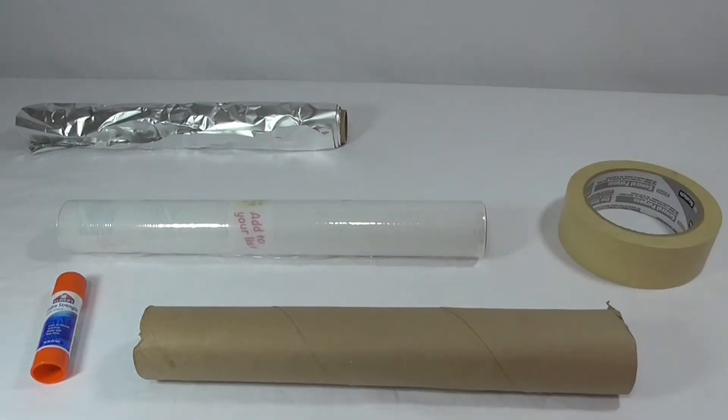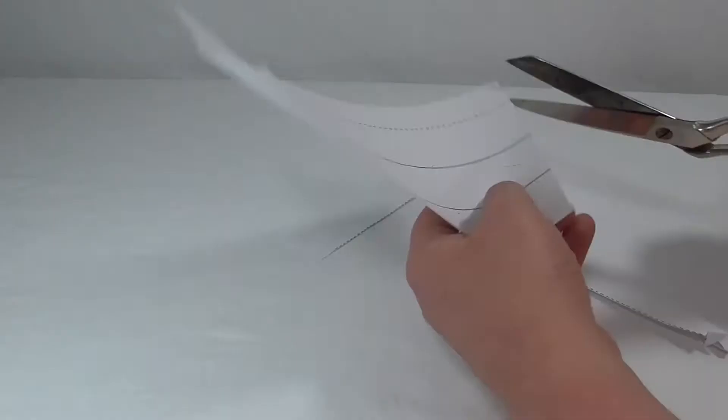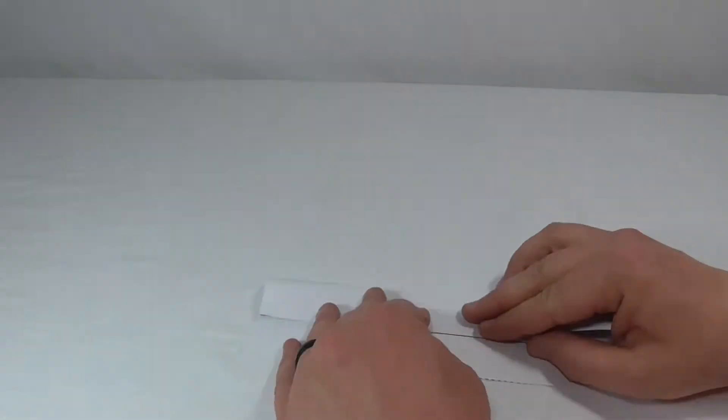You can print out the template or try to measure and make it yourself. Cut out and fold the triangular paper frame for your reflective inside of your kaleidoscope.